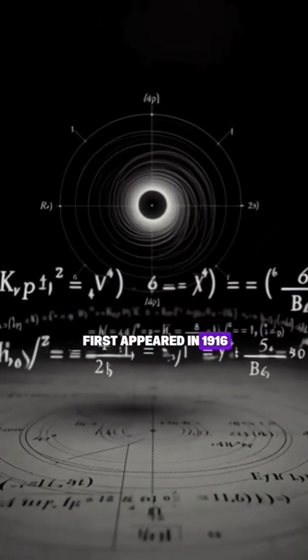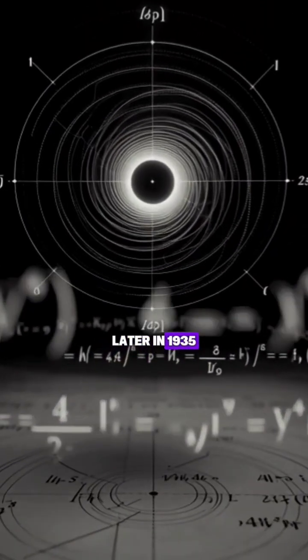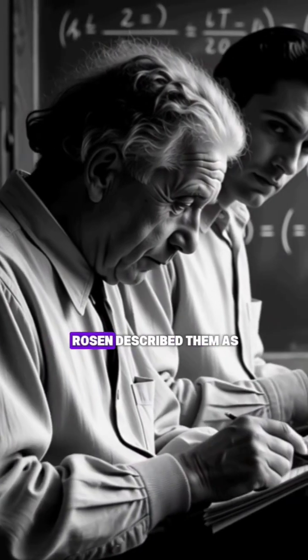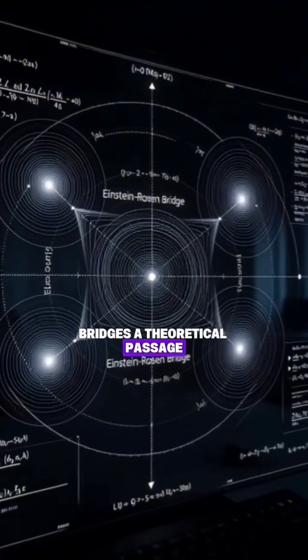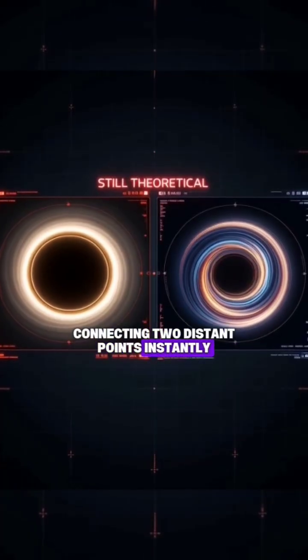The idea of wormholes first appeared in 1916. Later, in 1935, Albert Einstein and Nathan Rosen described them as Einstein-Rosen bridges, a theoretical passage connecting two distant points instantly.